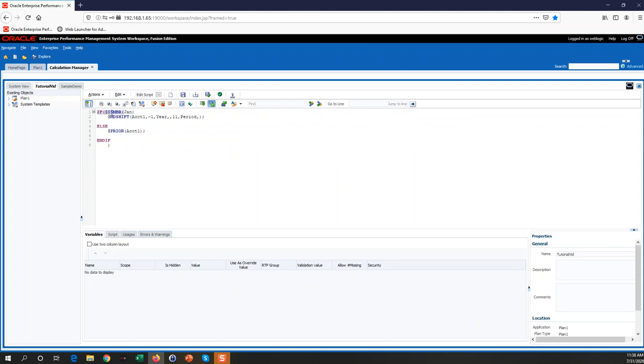What we're saying here is if @ISMBR january, if it matches, then @MDSHIFT account one minus one year. What this is saying is at the member name account one, shift negative one for the dimension year and shift 11 forward for the dimension period. So what this is saying is if it's january then go back a whole year and shift forward 11 periods.